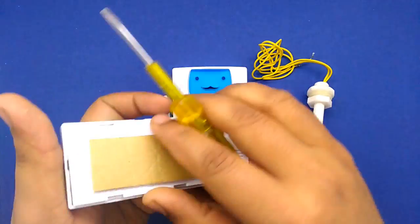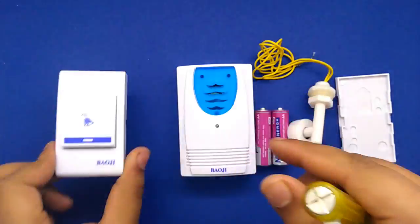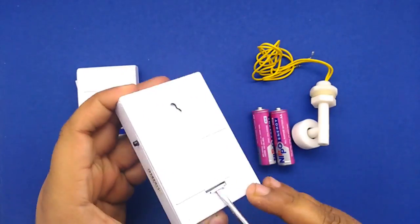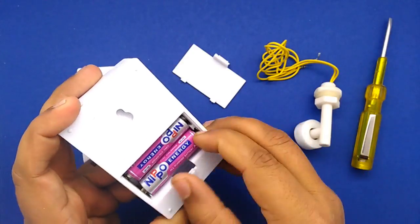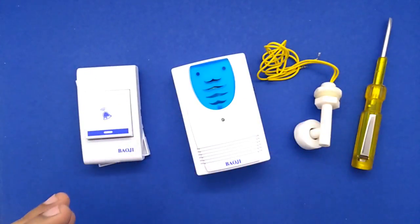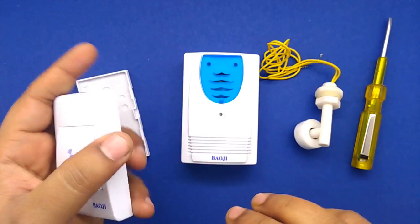Now you will need to insert batteries in the remote and receiver of the bell as shown. After installing the batteries, you will need to test it.